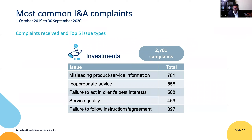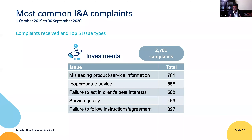The top five complaint types in the investments area: misleading product and service information is the highest at 781 — this covers disclosure of characteristics of a particular product, fees, and what the ongoing service arrangement looks like. Inappropriate advice is 556, and failure to act in best interests is 508. The government also allowed us to accept legacy disputes over the last year, relating back to 2008, so occasionally we had to apply the appropriateness test for advice prior to 1 July 2013. Service quality and failure to follow instructions are also significant. Only around 10% of complaints go to a formal decision.